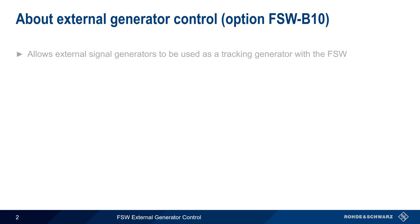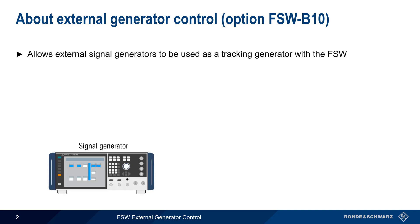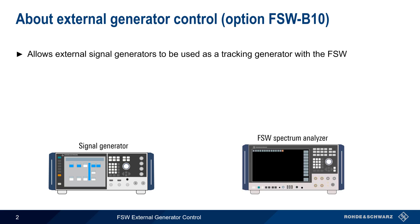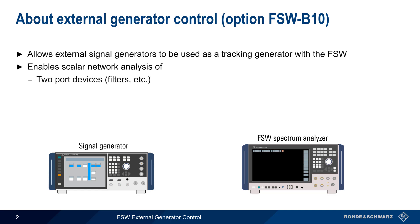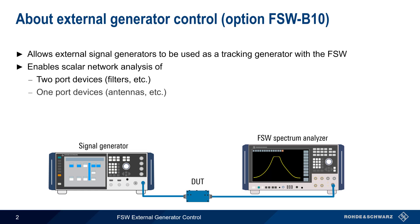The External Generator Control option, FSW-B10, allows external RF signal generators to be used by the FSW as so-called tracking generators. This enables scalar network analysis of two-port devices, such as filters, as well as one-port devices, such as antennas. These are more commonly referred to as transmission and reflection measurements.